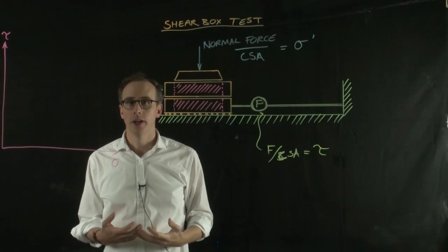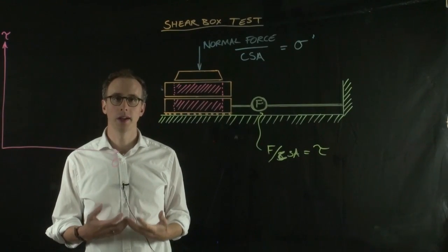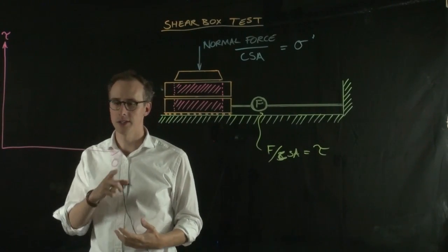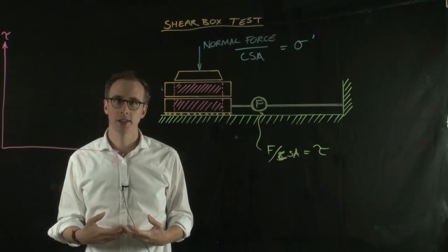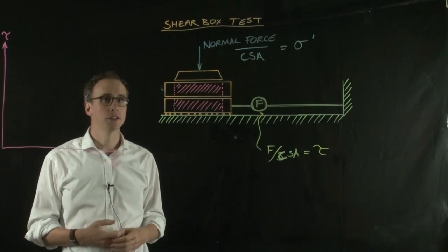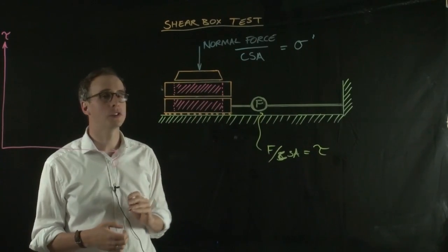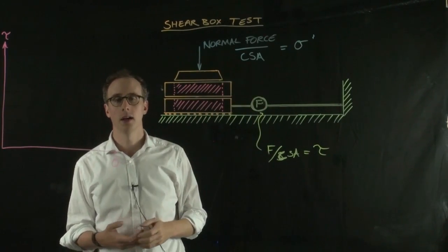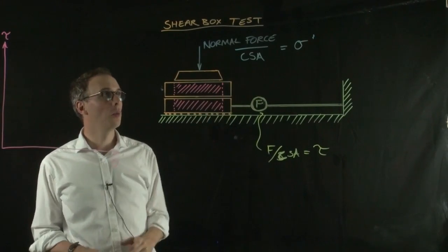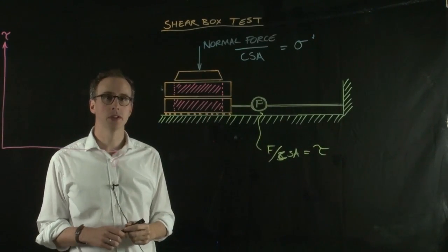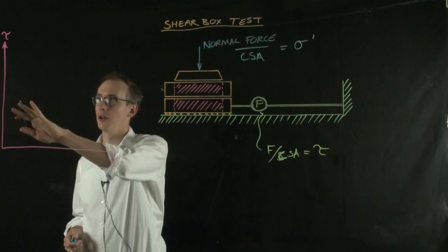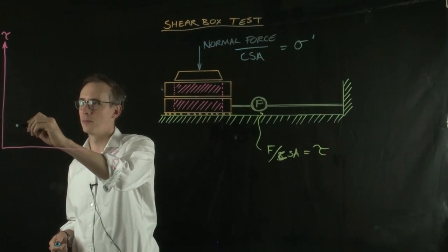What we want to do in the shear box test is represent this information on a Mohr-Coulomb failure envelope. If we plot shear stress against normal effective stress, we want to generate the straight-line Mohr-Coulomb failure line. We keep the normal stress constant throughout the test and increase the shear stress until the material fails. If we know the normal stress and the shear stress at the point of failure, we can draw one point on this graph.